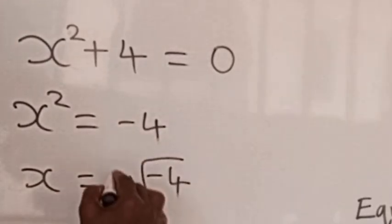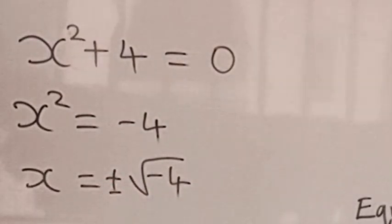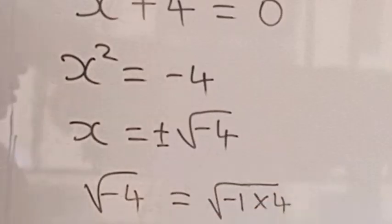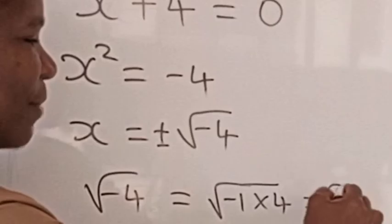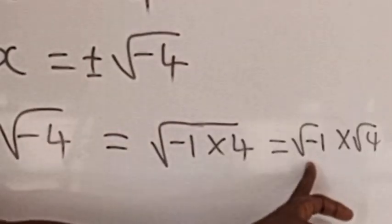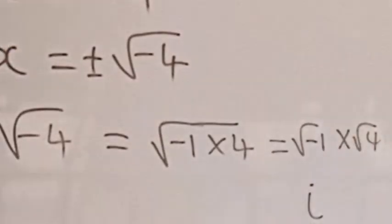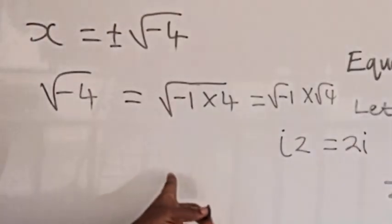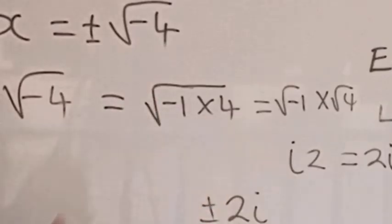So x is equal to plus or minus the square root of minus four. Now, the square root of a product is equal to the product of the individual square roots. So the square root of minus four is the square root of minus one times four, which equals the square root of minus one times the square root of four. The square root of minus one is i, and the square root of four is two, giving us plus or minus 2i.